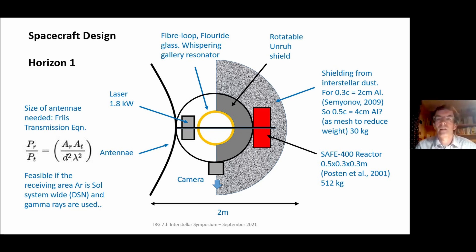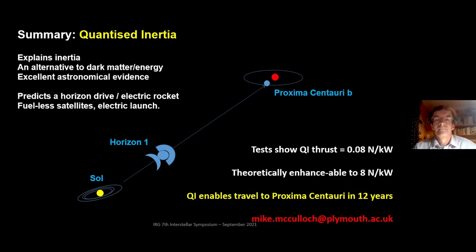Okay, so a summary is that Quantized Inertia explains inertia for the first time. It's an alternative to dark matter. It's got very good astronomical evidence behind it. It predicts a horizon drive, what you might call an electric rocket, fuel-less satellites, and it enables interstellar travel. So we have tests showing QI thrust of 0.08 newtons per kilowatt. That's theoretically enhanceable to 8 newtons per kilowatt, and we're going to try and do that in the next year with the DARPA funding. And QI enables travel to Proxima Centauri in 12 years this way.